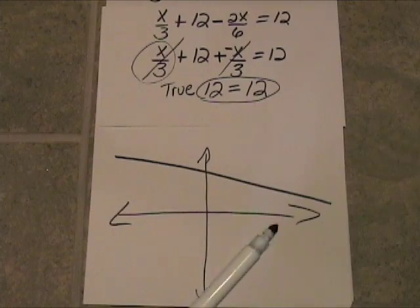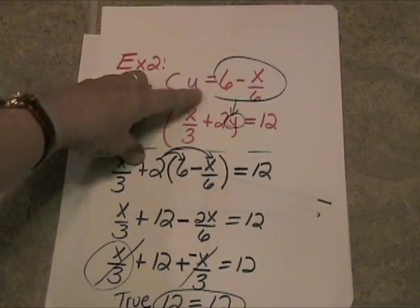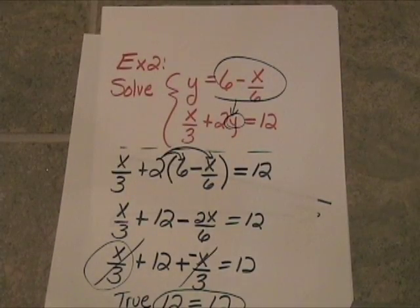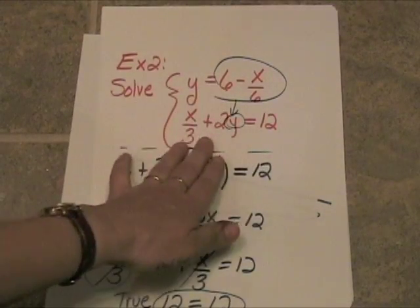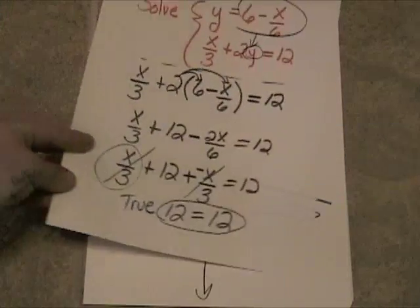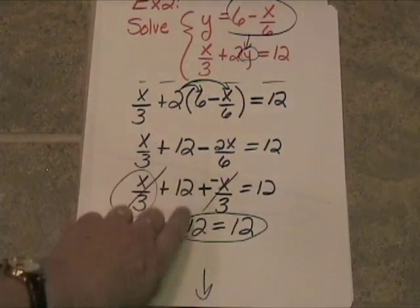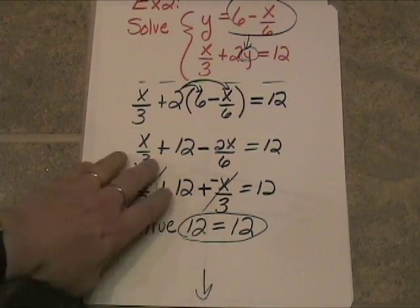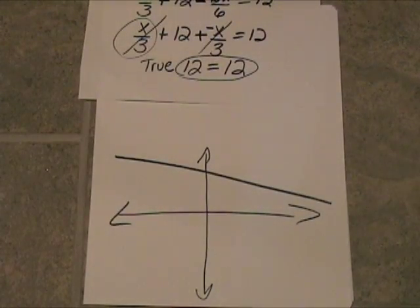But it hasn't. Remember what I said. These two equations are describing the same line. Every point that works in this equation also works in this equation. And we know that because when we did the algebra, the variables dropped out and we were left with a true statement. So these lines are literally right on top of each other. Okay? This is a consistent system with infinite solutions.